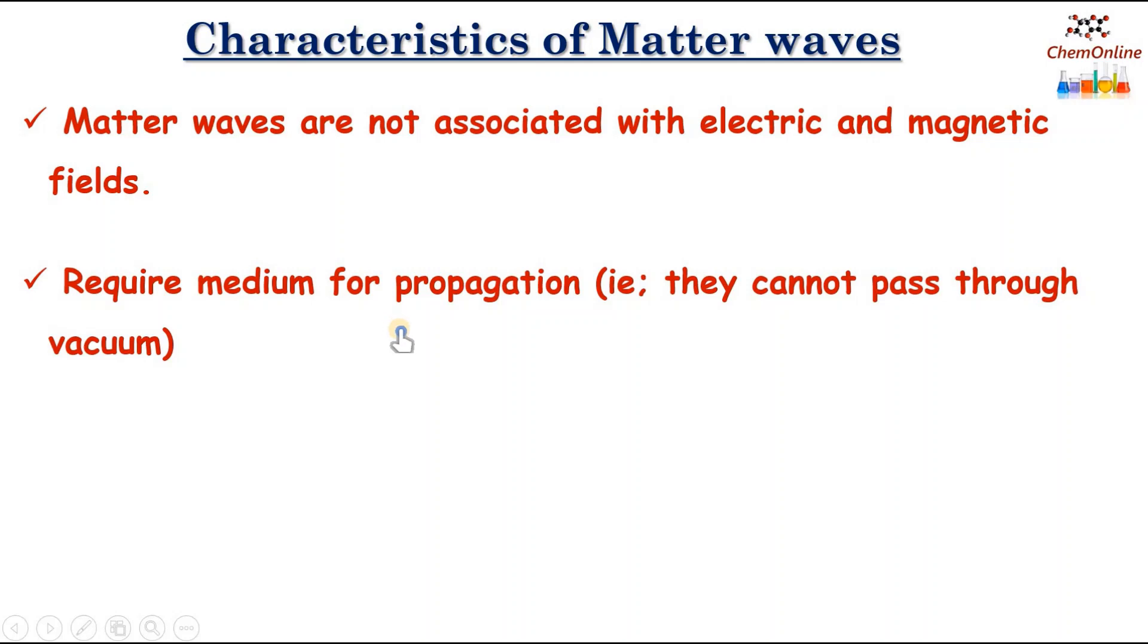The matter waves require a medium for propagation. That is, they cannot pass through vacuum. At the same time, electromagnetic radiation or electromagnetic waves do not require any medium for propagation. Or, they can pass through vacuum.